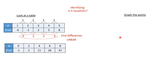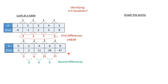Let's look at another table. First, check that x's go up by the same amount — here they all go up by 2. Now check the y-values: the first differences are plus 3, plus 9, plus 15, plus 21 — not the same, so it's not linear. Now we find the second differences, which are the differences of the first differences: 9−3=6, 15−9=6, 21−15=6. They're all the same, so it is quadratic.